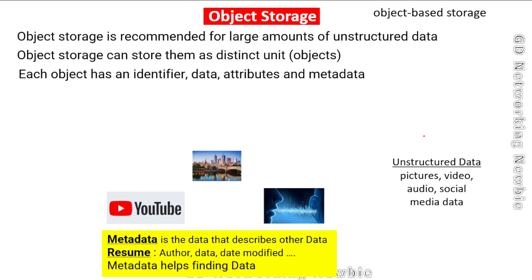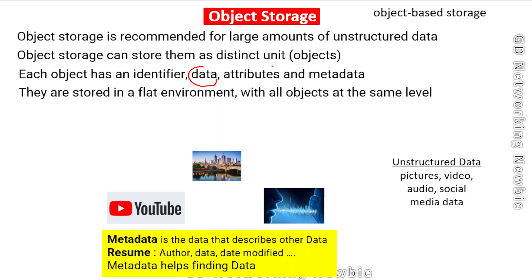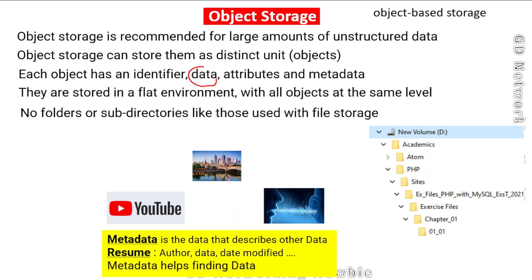The metadata is data that describes the data — for example, for a video, the metadata can include when it was created and when it was modified. Objects are stored in a flat environment, meaning all objects are at the same level. This means there is no hierarchy as in a file storage system — there are no folders, subfolders, or subdirectories in object storage.